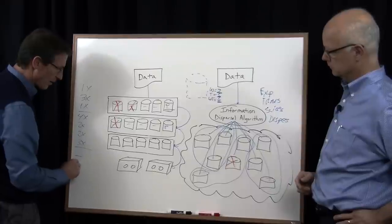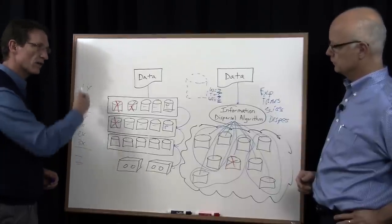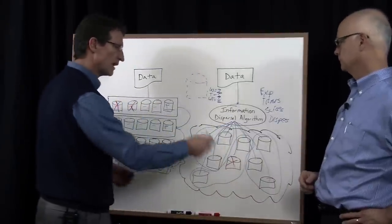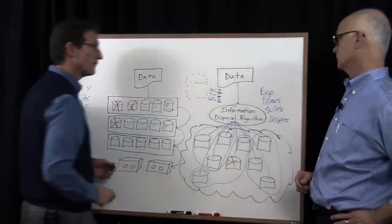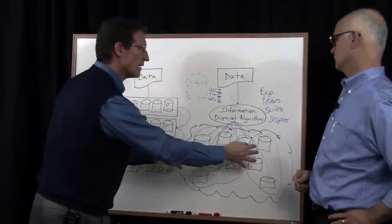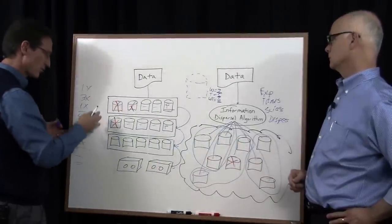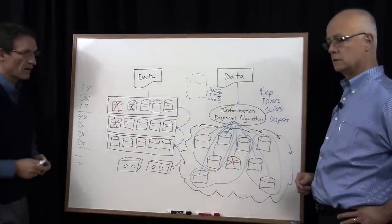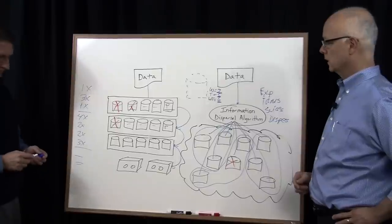When you get down to the bottom line, you're significantly more expensive in this approach than you are in a dispersal approach. And by the way, this is one copy of the data. It's only a single instance of the data, but it gives you the levels of reliability that you're getting by making three copies on disk and a fourth copy on tape. So significantly higher levels of reliability and availability.